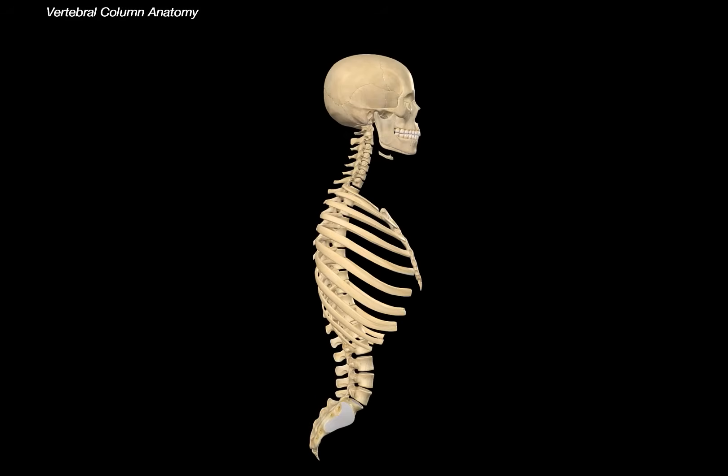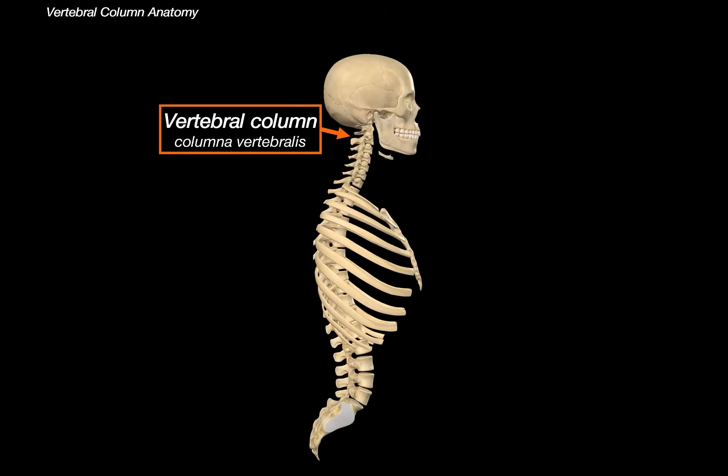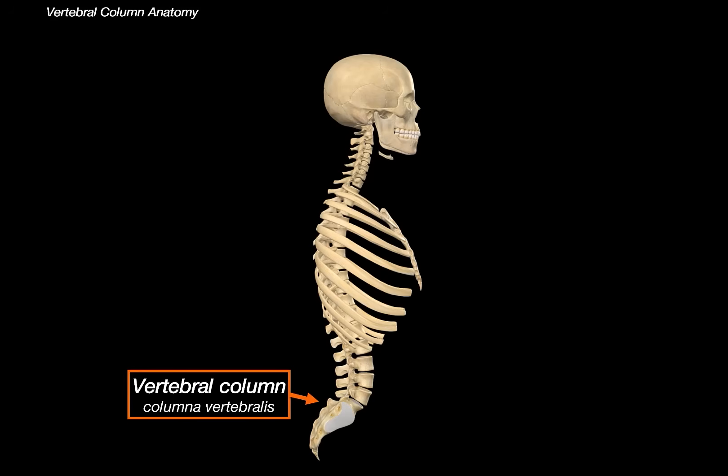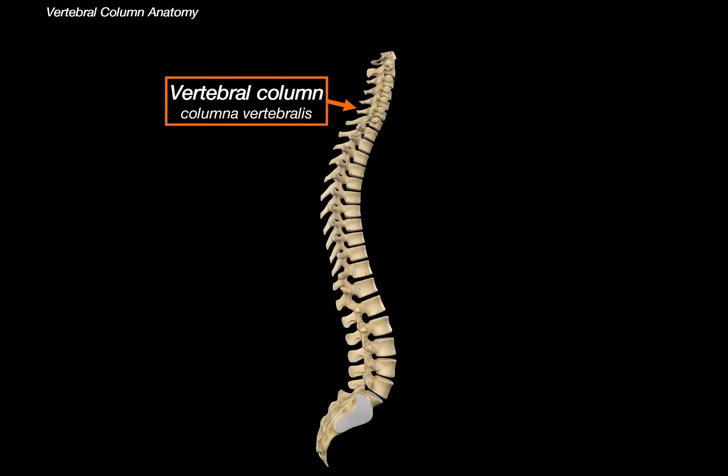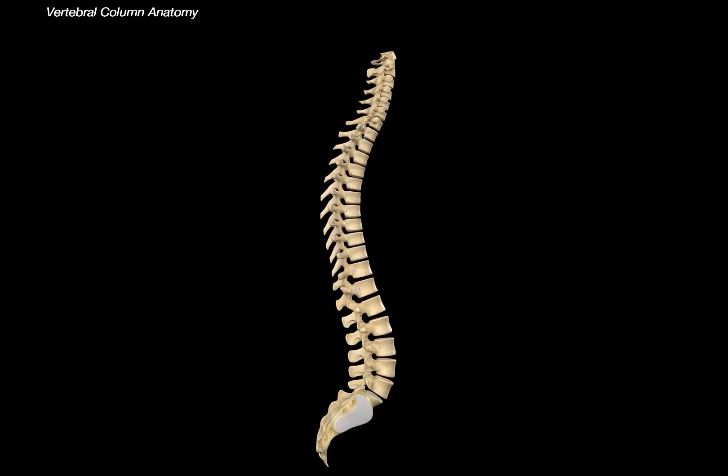Look at this — the vertebral column, spine, backbone. This is the core part of the axial skeleton in vertebrates. It goes from your skull all the way down to the tailbone. And when you look at it, really just don't think anatomy right now — look at this. You will notice that at the top it's much smaller. This is to not limit head, neck and arm movement.